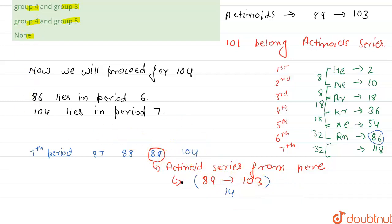So now we will check the group of these. This is our 1st group, this is our 2nd group, this is our 3rd group and 104 lies in our 4th group.